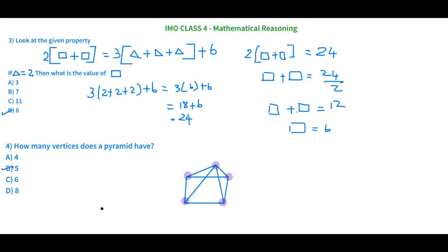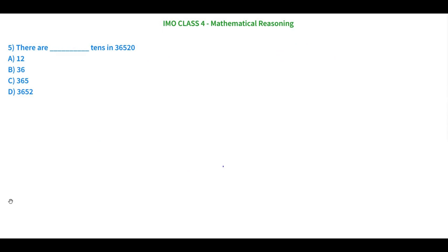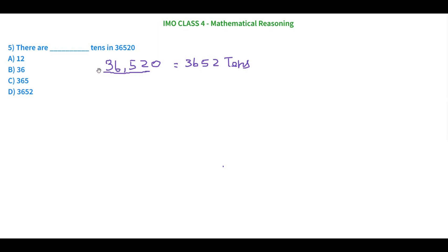Always remember: vertices are the points where two or three lines meet. Now the fifth question: there are blank tens in 36,520 — how many tens are there? A pretty easy trick: when a question asks how many tens are in a number, you start from the tens place and write all the digits from that position onward. So for 36,520 the answer is 3,652 tens.